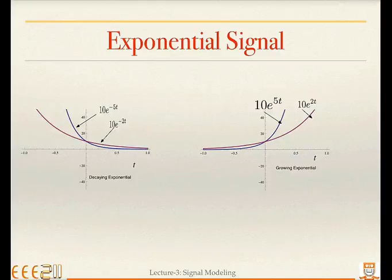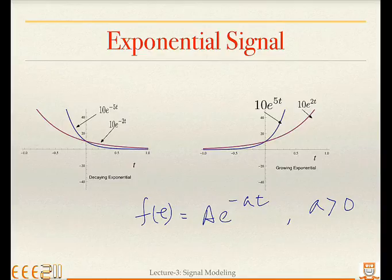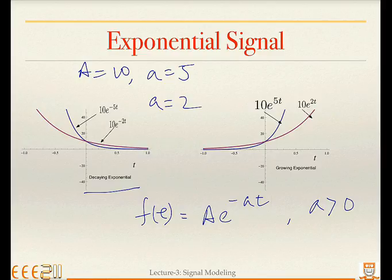Next we have the exponential signal — another signal we will encounter in this course. f(t) is represented by A·e^(−at). If we consider 'a' to be a positive value, we call it an exponential decaying sinusoid. For example, when a equals 5, the signal decreases much faster than when a equals 2. The red signal where a equals 2 decays slower compared to the decay rate when a equals 5.